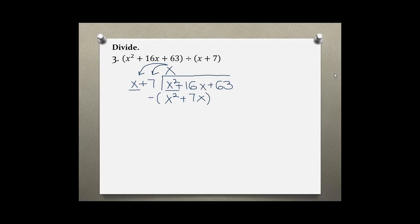Change your signs because you are subtracting and just add down. First term cancels out and 16x minus 7x is 9x.